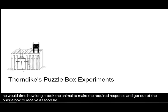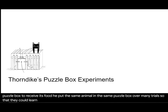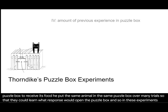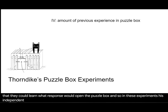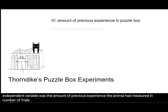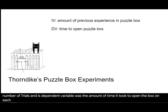He put the same animal in the same puzzle box over many trials so that they could learn what response would open the puzzle box. In these experiments, his independent variable was the amount of previous experience the animal had, measured in number of trials, and his dependent variable was the amount of time it took to open the box on each trial.